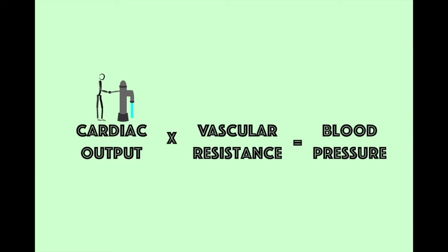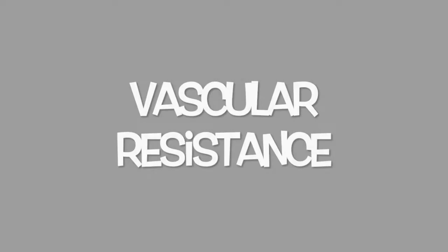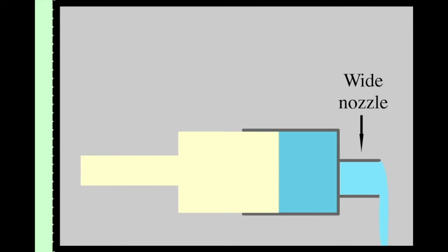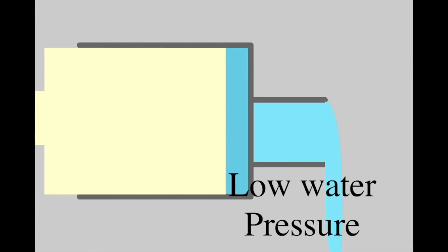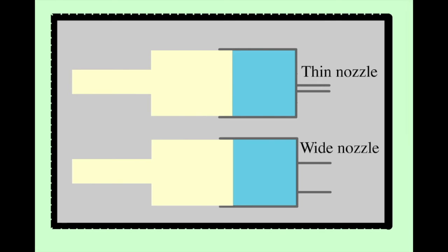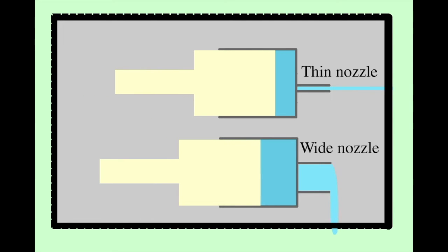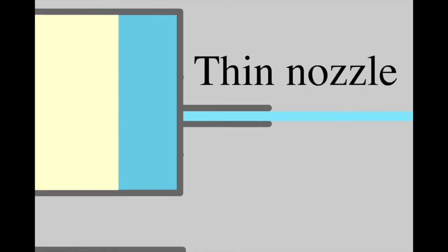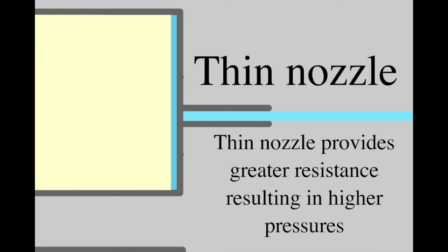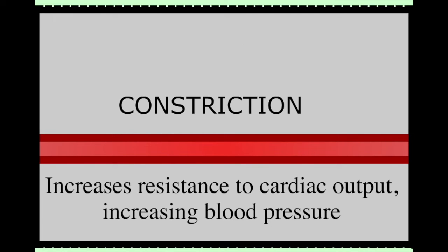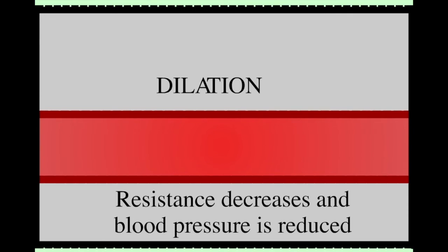The second and equally important part of the blood pressure equation is vascular resistance. This pump is pushing fluid through a wide nozzle, which provides very little resistance, so the water comes out at very low pressure. This second pump is pushing the same volume of water at the same rate but through a much thinner nozzle — the water comes out at much higher pressure, because the thin nozzle provides much more resistance. Blood vessels in the body increase or reduce blood pressure in the same way: they can constrict, increasing resistance and producing higher pressures, or dilate, providing less resistance and reducing blood pressure.